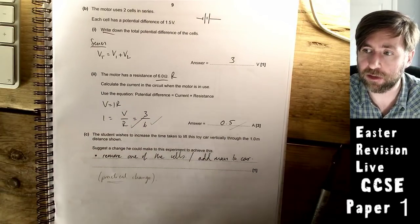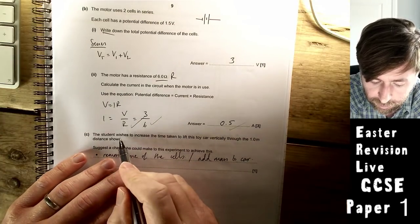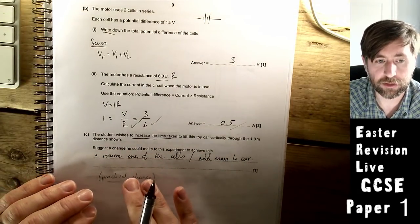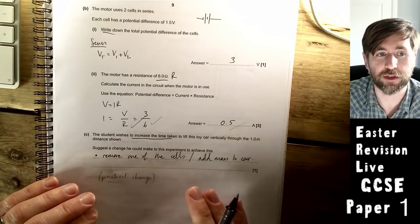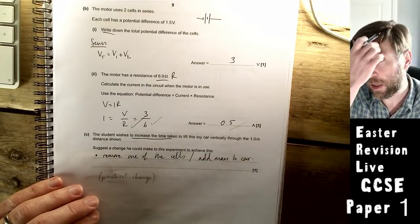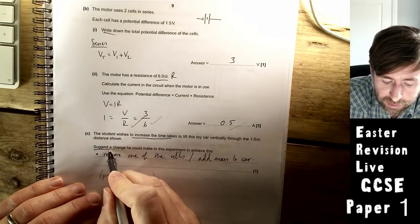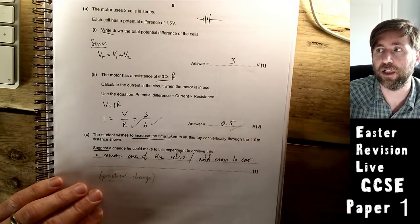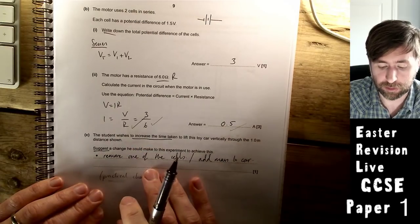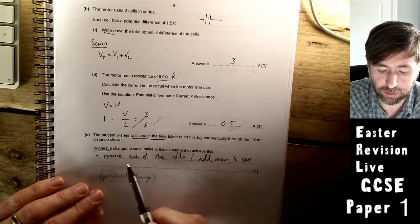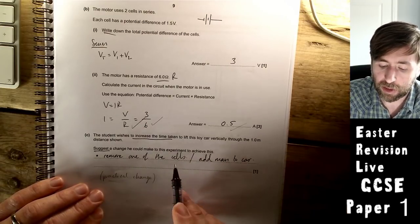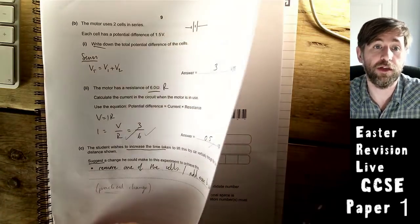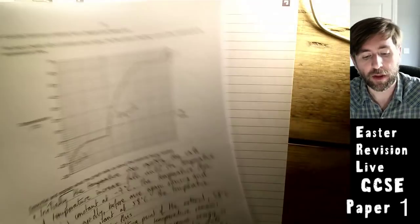Suggest a change he can make to increase the time. Read that carefully because a lot of people actually wrote ways that they would reduce the time. They wrote add more cells. They were looking for a practical change, not just reduce the potential difference. The obvious one is to remove one of the cells, so then you have 1.5 volts. But you could also say add mass to the car would increase the work done and therefore increase the time.